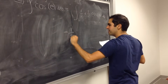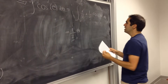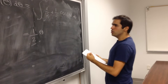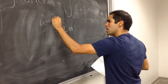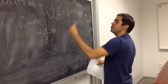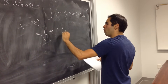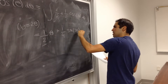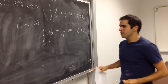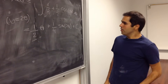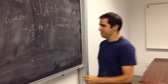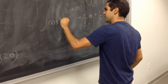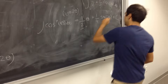We can integrate that directly. Using a substitution u equals 2 theta for the second term, we get one half theta plus one quarter sine of 2 theta plus a constant. So we have the result: the integral of cosine squared theta d theta equals one half theta plus one quarter sine of 2 theta plus C.